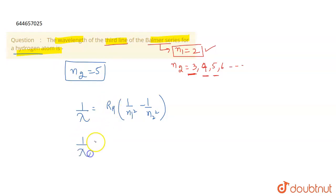So we will get 1 by lambda is equal to RH, 1 upon 2 square minus 1 upon 5 square and this will come out to be equal to RH, 1 by 4 minus 1 by 25 and this means that 1 by lambda will be equal to 21 by 100 RH and what will be the value of the wavelength?